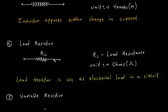This is the symbol for load resistor, and it is represented by RL, where RL represents the load resistance value. The unit of load resistance is ohms, which is represented by omega. Load resistor is used as an electrical load in a circuit.